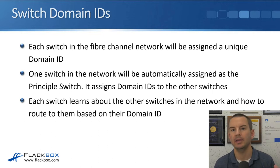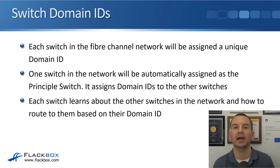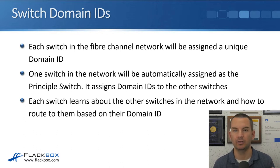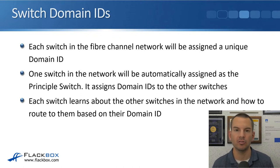With Fibre Channel, pretty much everything happens automatically, and the information gets replicated automatically through the network as well. You can override that and set things manually if you want to, but out of the box, everything is pretty much automatic. So by default, one of the switches will be elected as the principal switch, and one of its jobs is to make sure that all of the other switches have their own unique domain ID.